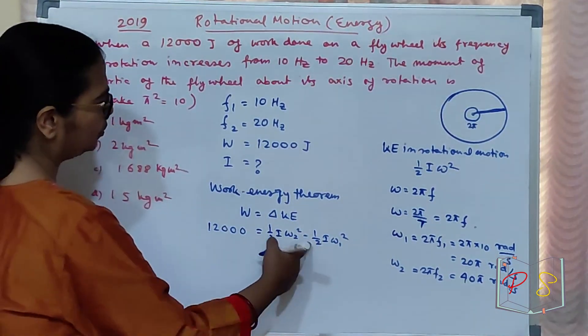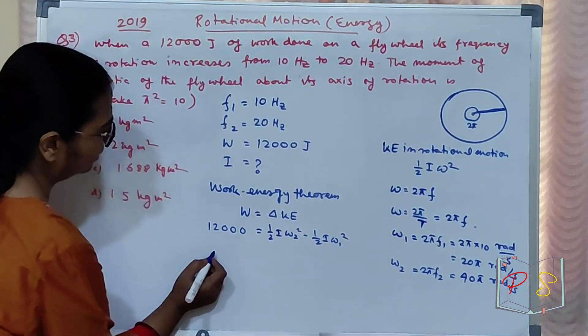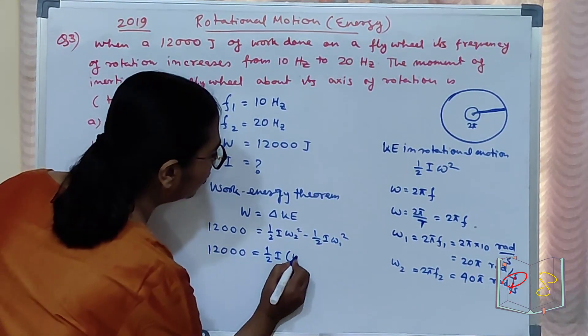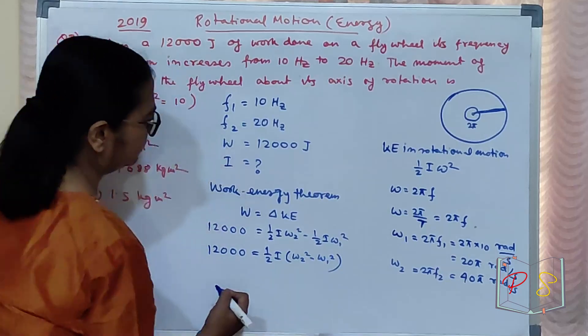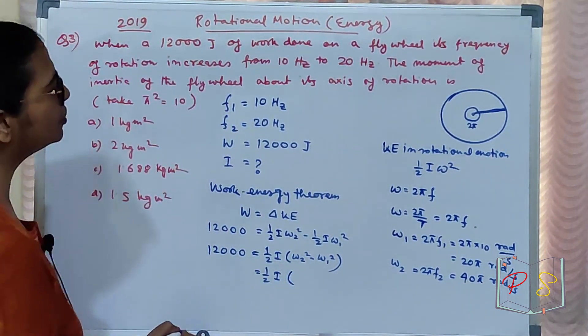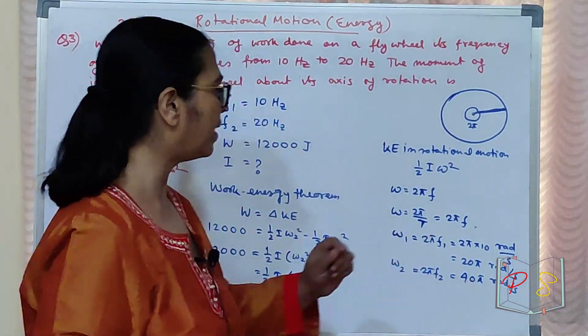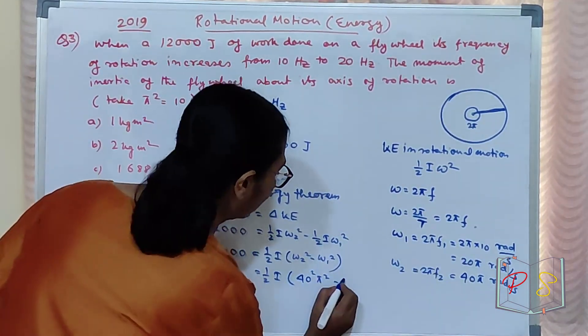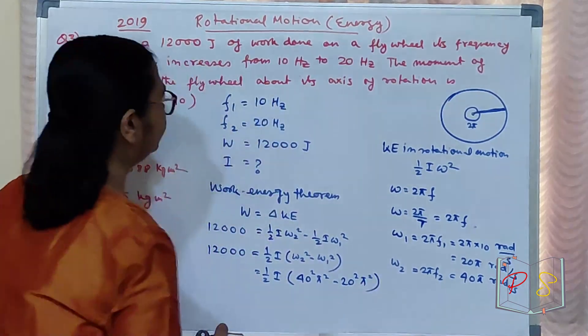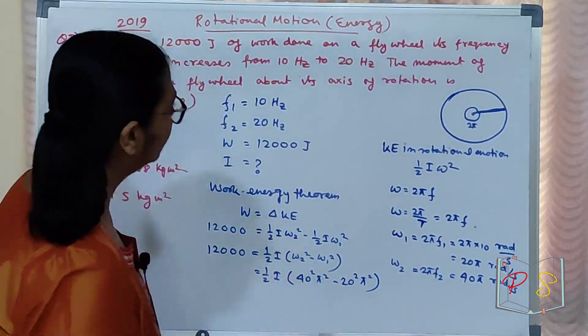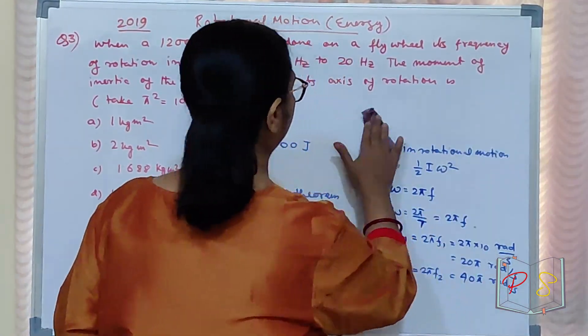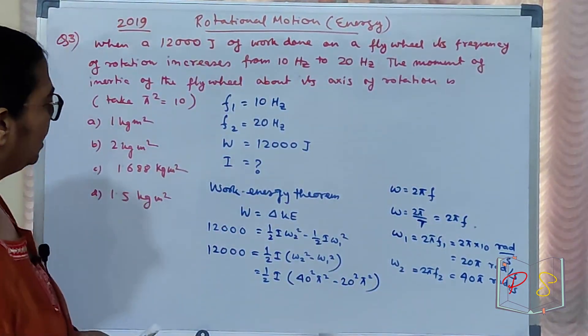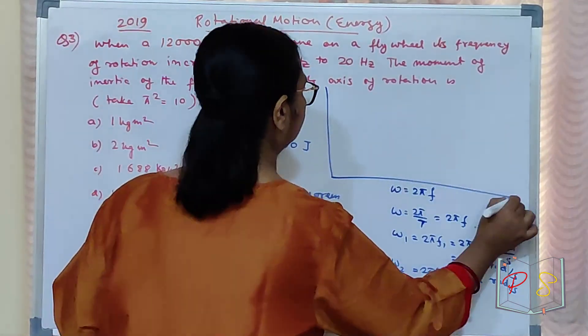Jojo kam ho jayega sabkuch kam ho jayega. Isko 2 kar le hai. Dekho. Dheere dheere karte hai. 12000 equal to half of I of omega 2 square minus omega 1 square. Equal to half of I of omega 2 square, 40 square pi square. 40 square pi square. Similarly omega 1 ke liye 20 square pi square. 20 square pi square. Abhi mujhe thoda sa jagah chahiye. Main upar thoda wrap kar rahi. Idhar se I nikalna hai mujhe.